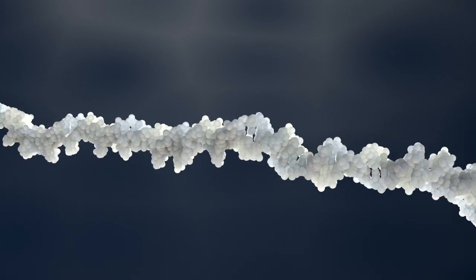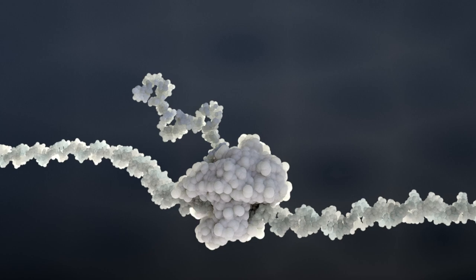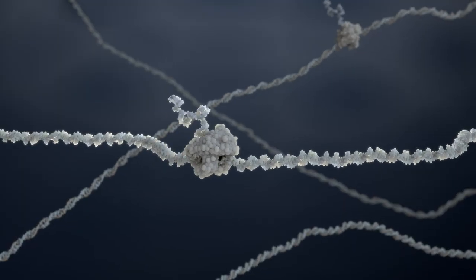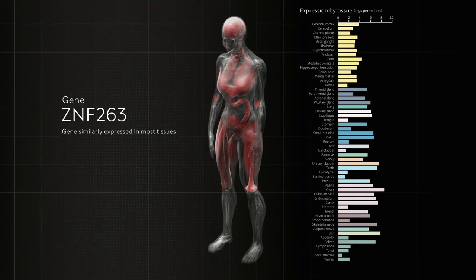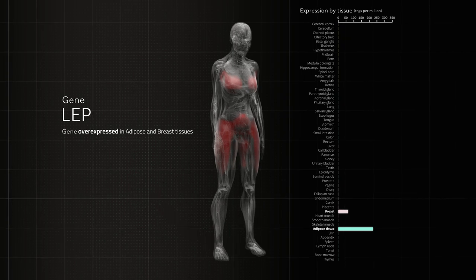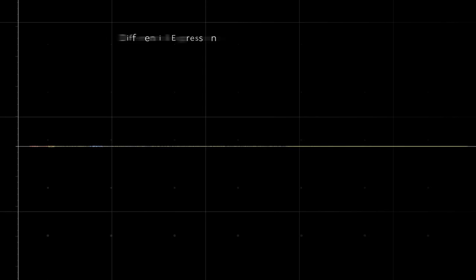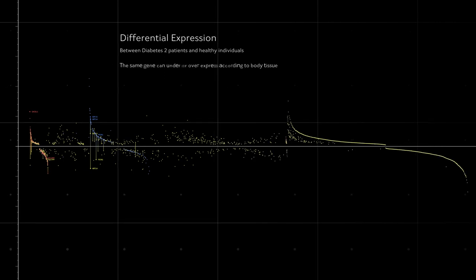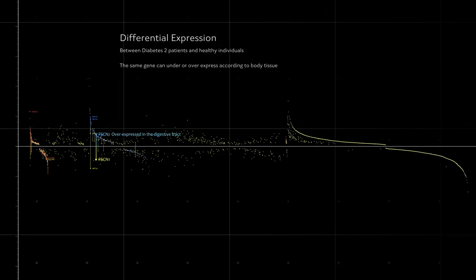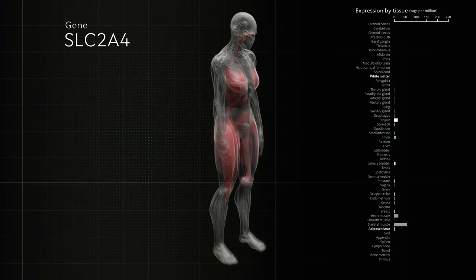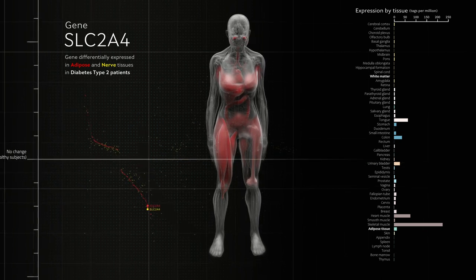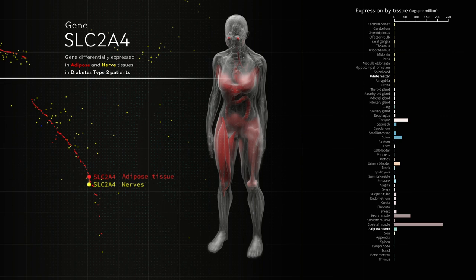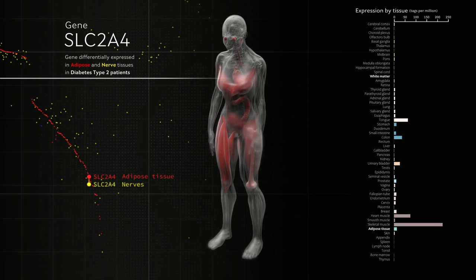We can also look for correlations between disease and gene expression, the process that converts DNA instructions into proteins and other molecules. Gene expression is what defines the type of tissue, even if all tissues have the exact same genome. By analyzing expression data from different patients, we can find differences in every cell and connect abnormal expression to disease according to body tissue. For example, this gene involved in glucose transport is under-expressed in these tissues in diabetes patients.